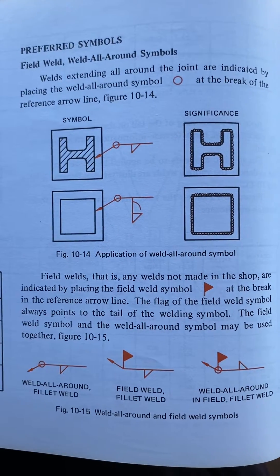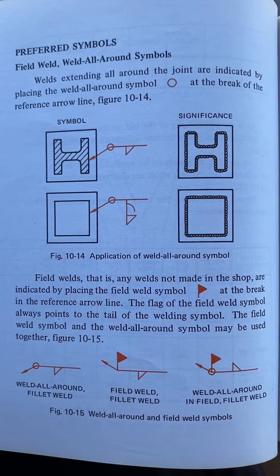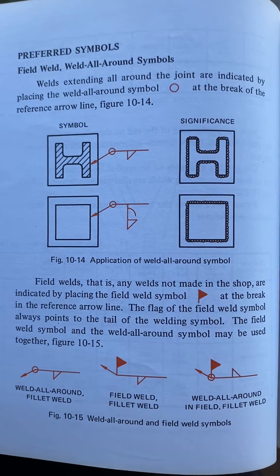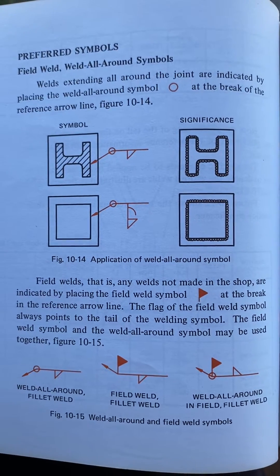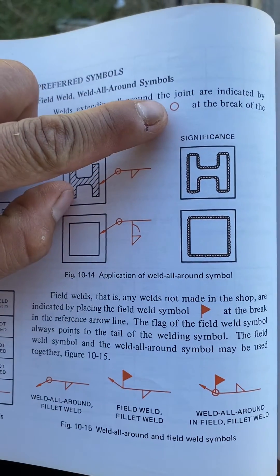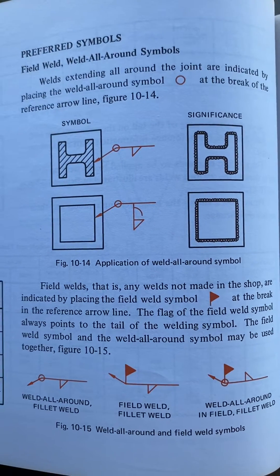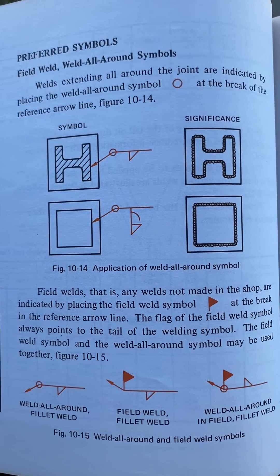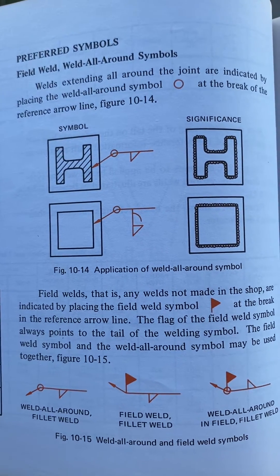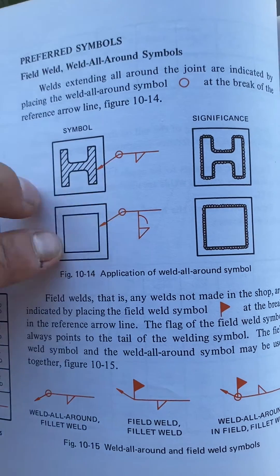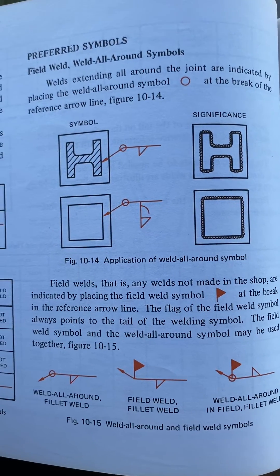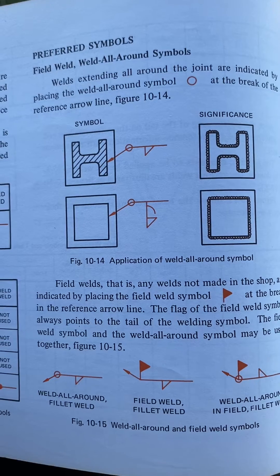Weld all-around symbols: welds extending all around the joint are indicated by placing the weld all-around symbol at the break of the reference arrow line, as shown in figure 10-14. This is the application of the weld all-around symbol.